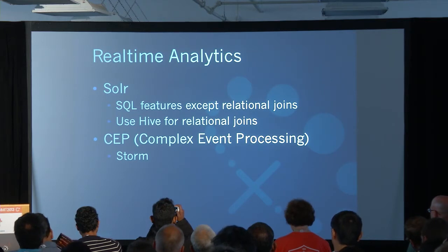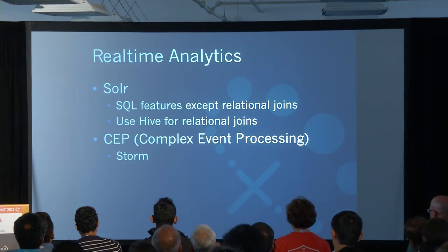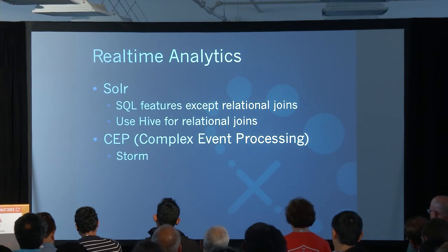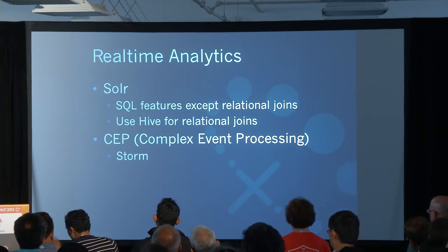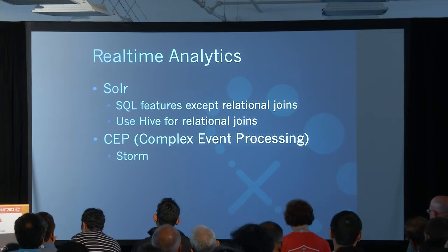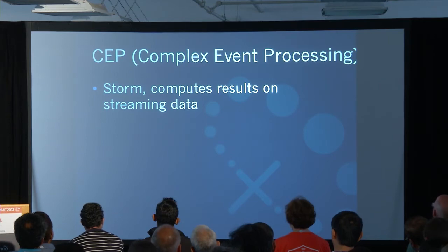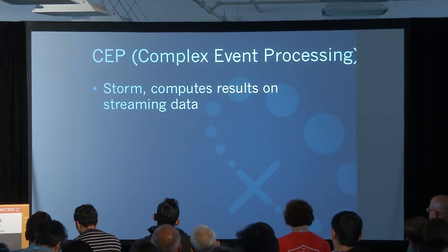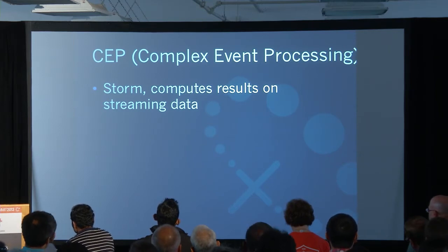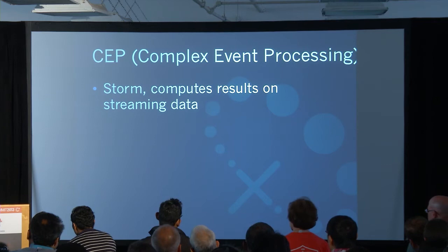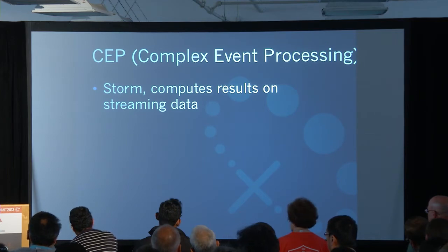For real-time analytics you can use Solr, do complex event processing, or use Cassandra. There's also newer stuff like Impala and Stinger for Hive, where latency is typically 30 seconds down to about five seconds. Complex event processing does all calculations in real-time — the data's at rest but all queries are computed as data is streamed through. Solr actually iterates on the data at rest, typically in RAM.